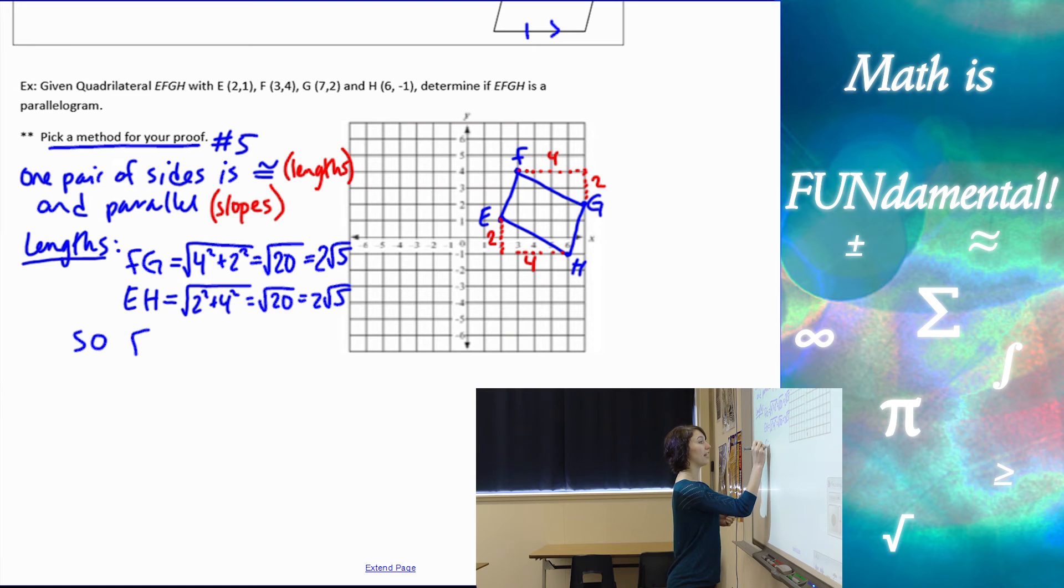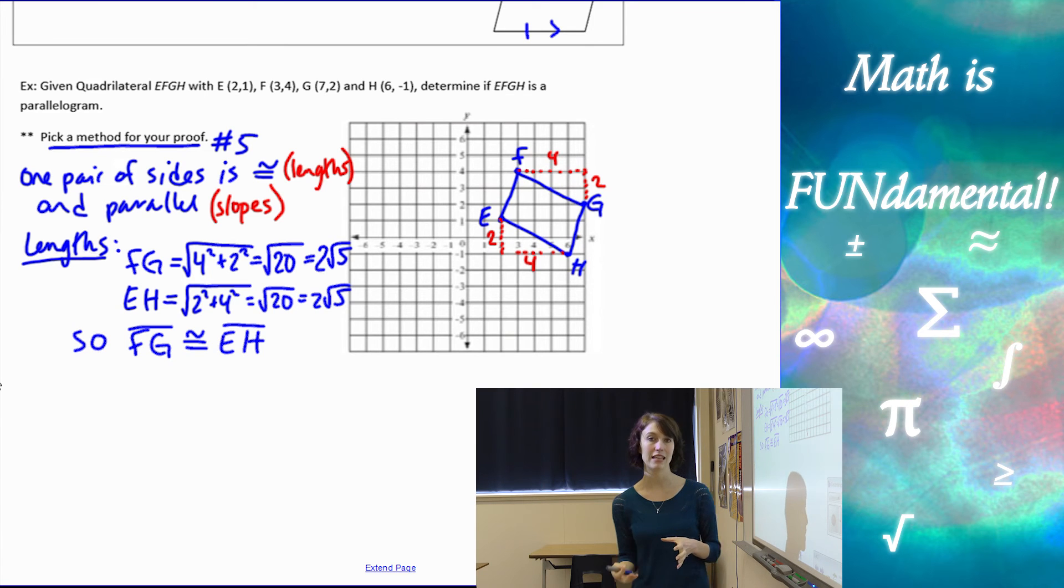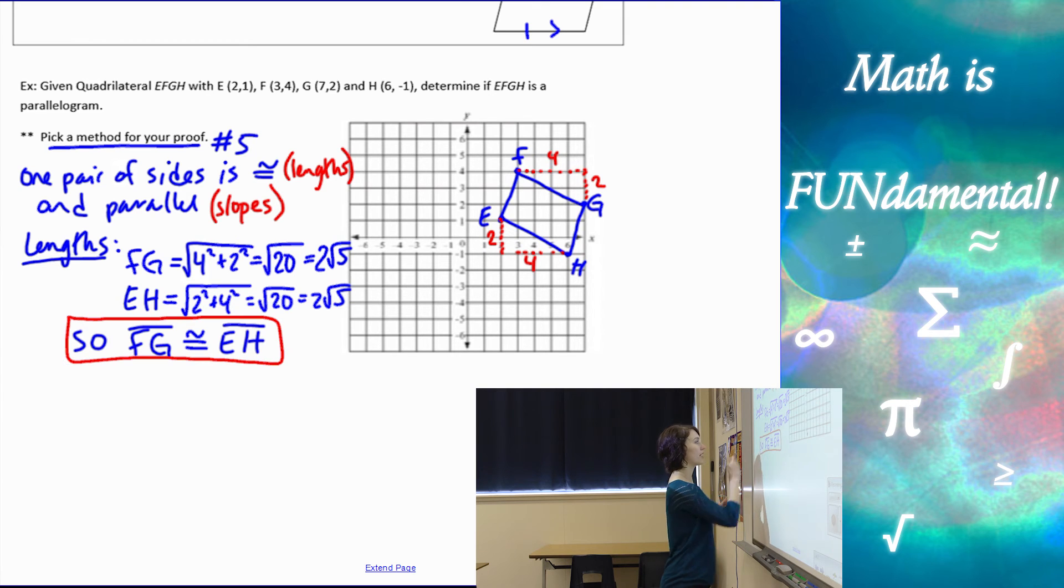We want to show all our work. Now I want to conclude that FG is congruent to EH. When we're proving things like this using algebraic work, we really do want to make conclusions based on our work instead of just stopping at our lengths. If both lengths are the same, then we conclude that FG is congruent to EH.